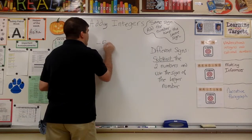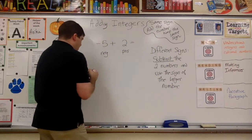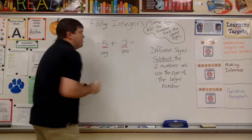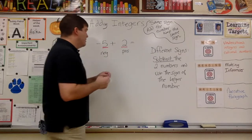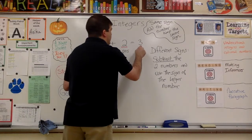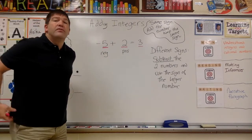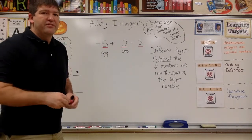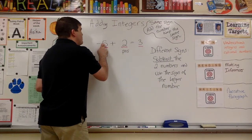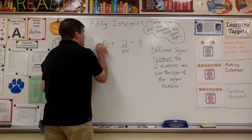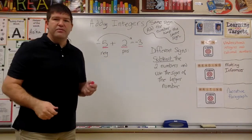Let's do another one — this time negative five plus positive two. I have a negative and a positive. I look at just the digits: five and two. Because I have opposite signs I subtract them — five take away two is three. Now I look at which digit is bigger. Five is bigger than two, so I keep the sign of the five, which is negative, and put it in front of the three. So negative five plus two is negative three.